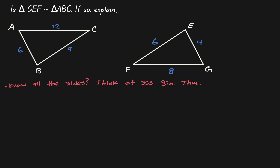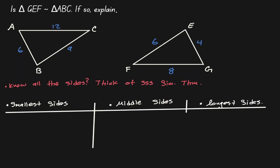When we are setting up our proportions, we are going to be comparing the smallest sides, the longest sides, and the middle sides. The smallest side on the left hand side is AB with the length of 6, and the smallest on the right hand side is EG with the length of 4. So we can do AB divided by EG — that would be 6 over 4, which is 3 halves.